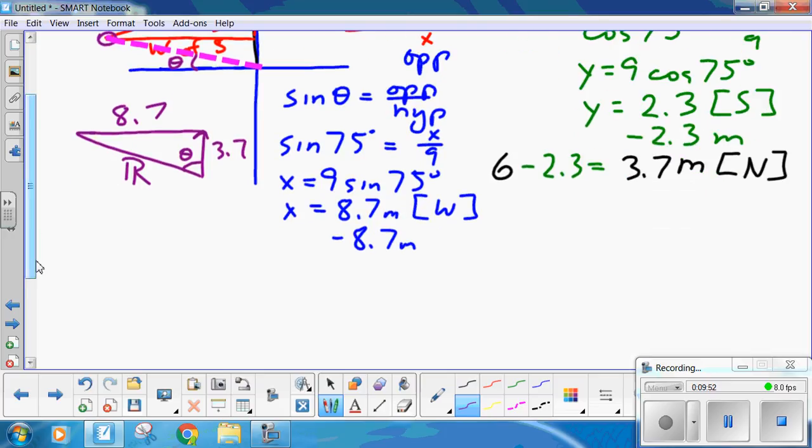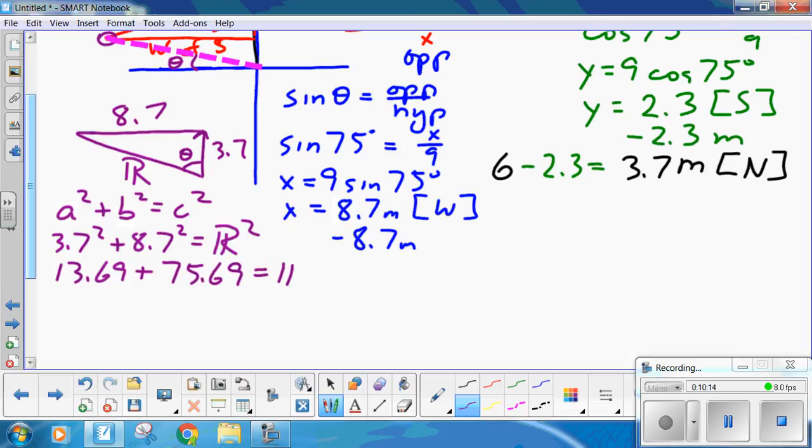Welcome back. Doing Mr. Pythagoras. 13.69 plus 75.69 equals resultant squared. X squared is 89.38. The resultant is 9.45 meters. Please believe that.